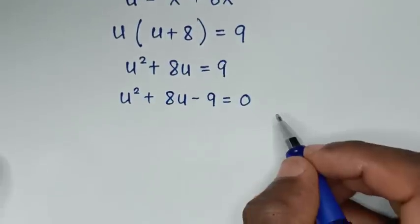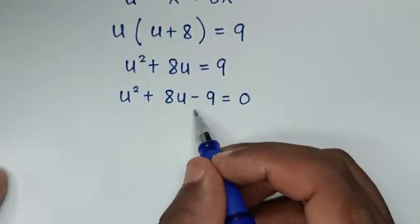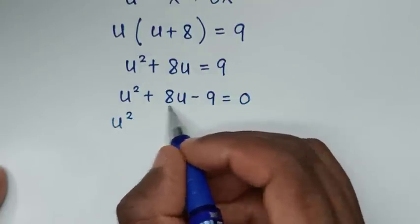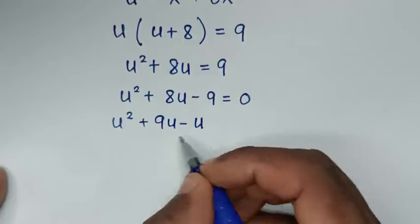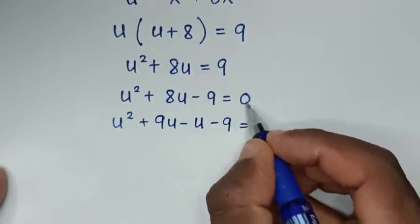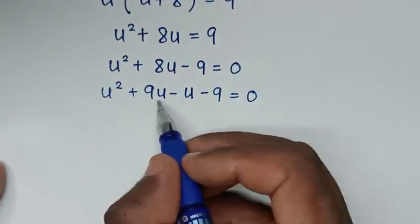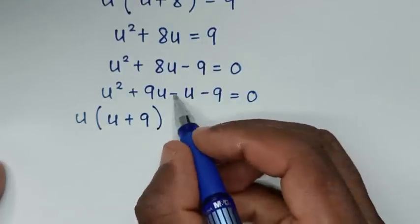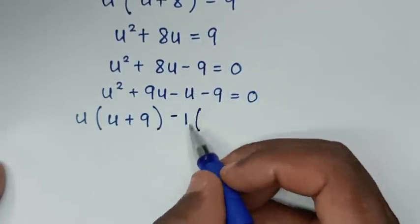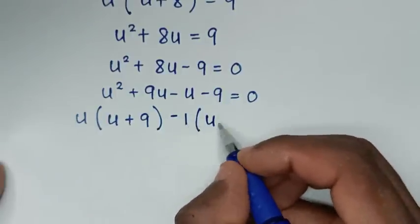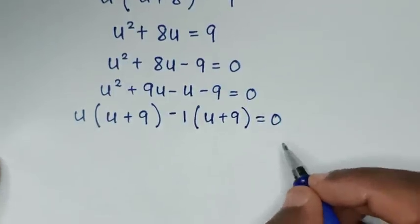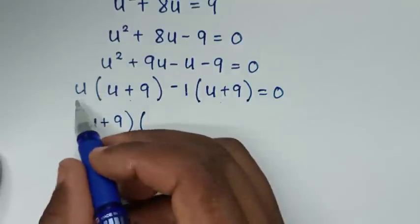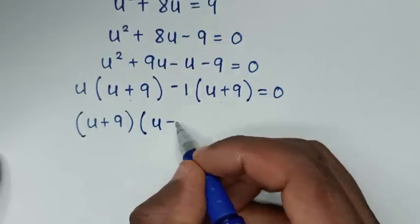Taking 9 to the left side gives u²+8u−9 = 0. We solve by grouping and factorization: rewrite 8u as 9u−u, so u²+9u−u−9 = 0. Factor: u(u+9) − 1(u+9) = 0, giving (u+9)(u−1) = 0.